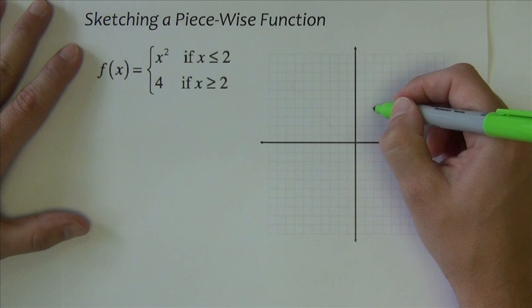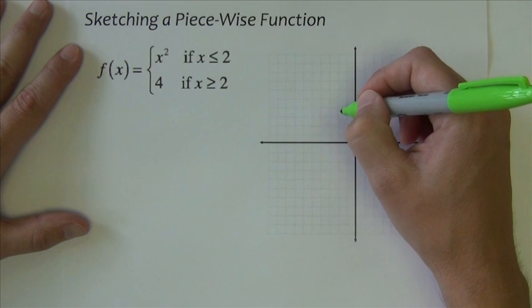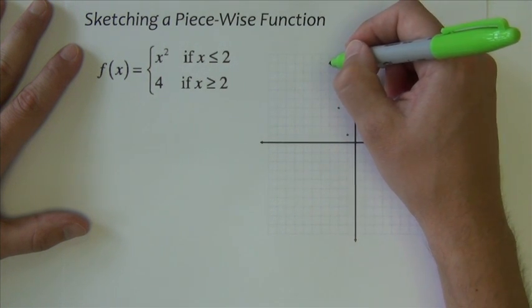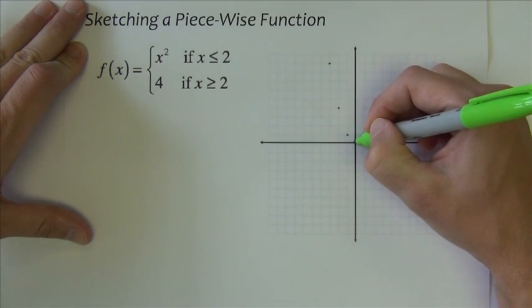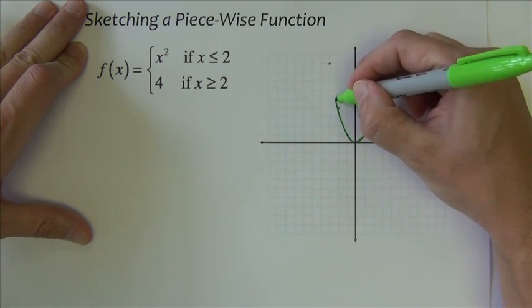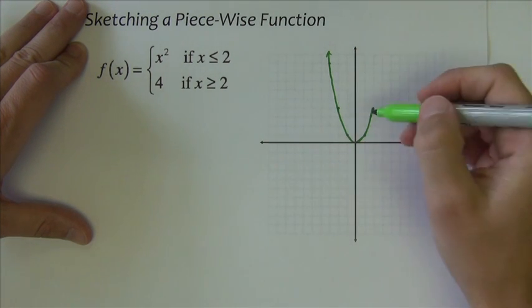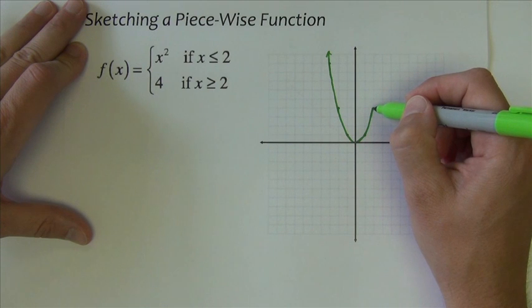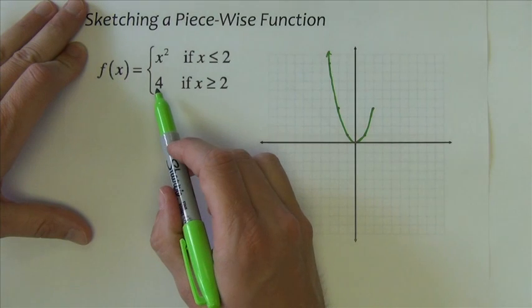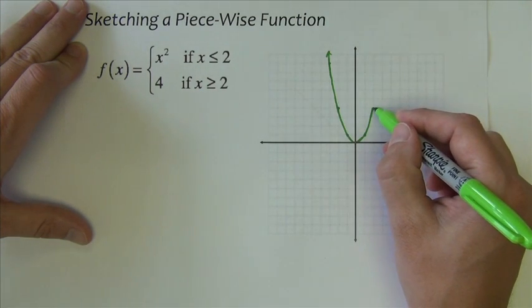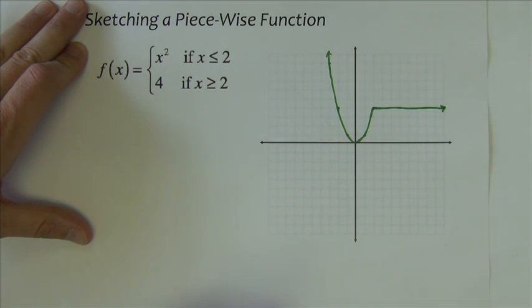So I'd start at two, two squares to four, there's a point, then one, one, zero, zero, negative one, one, negative two, four, negative three, nine, looks like this. So there's my parabola piece. No arrow on this end because it doesn't go past two, but it does arrow on this end. Now I want to graph the line four for x is bigger than two, so the horizontal line four looks like that.